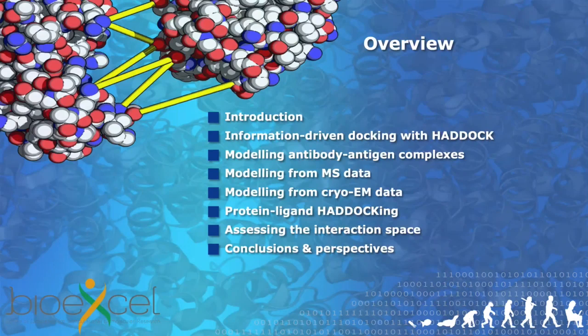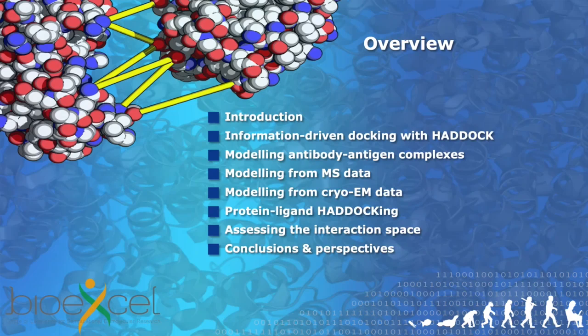Then I will move into the specifics of how we are doing integrative modeling in HADDOCK, describe how HADDOCK is working, what kind of information we can use, and I will move on with a number of examples about complexes. The first one will be about modeling antibody-antigen complexes. Then I will move into using mass spectrometry data to guide the modeling process and cryo-electron microscopy data. HADDOCK can also handle small molecule docking and I'm going to show you some of our recent results in protein-ligand small molecule docking.